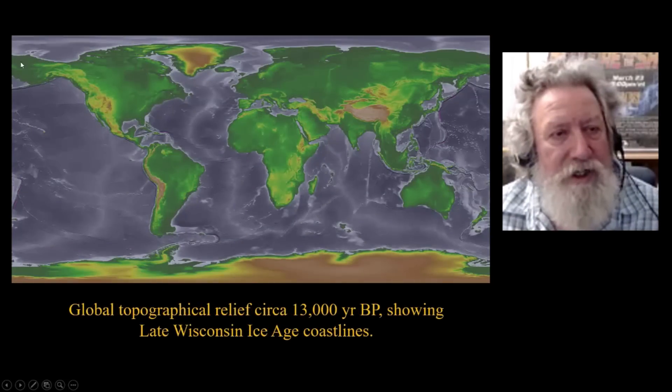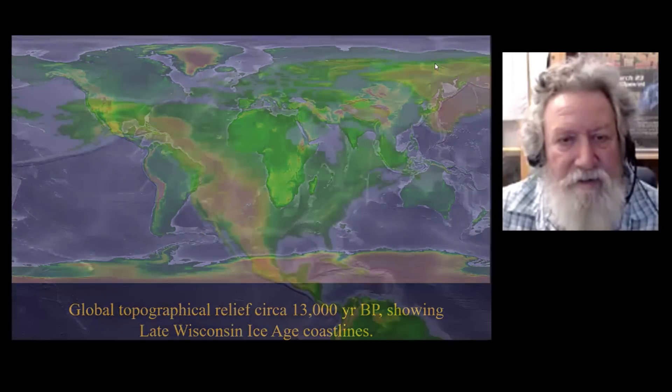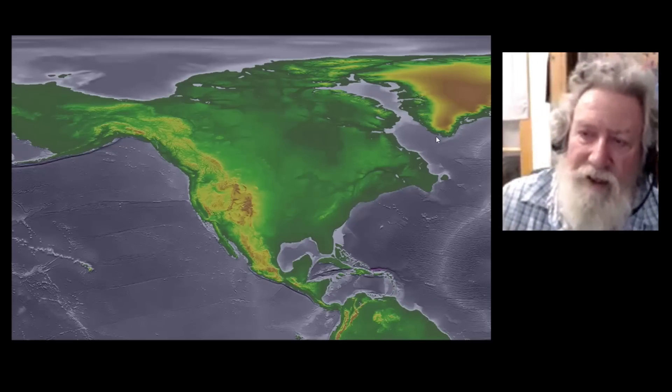Look up here at the Bering Land Bridge — you can see it's actually bigger than the modern state of Alaska. Here we can see North America and the size of the shelf that separates Alaska from Siberia. When we drop sea levels 360 feet, we get an extremely huge land mass that was densely populated with megafauna during the last ice age. In order to be densely populated with megafauna, it had to have enough vegetation there for them to eat.